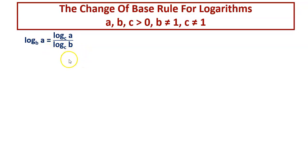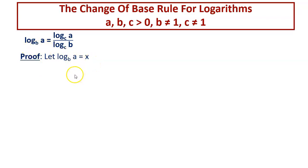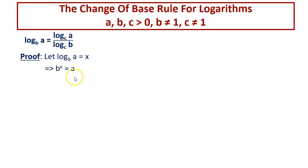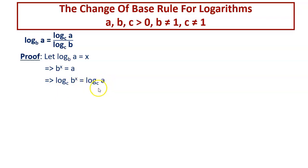Now, coming to the proof. Let log of A to the base B equal to X — that is, the left-hand side is equal to X. We convert this logarithmic equation to the corresponding exponential equation and we get B to the power of X is equal to A. Next, we take the log of both sides to the base C, so it will be log of B to the power X to the base C is equal to log of A to the base C.